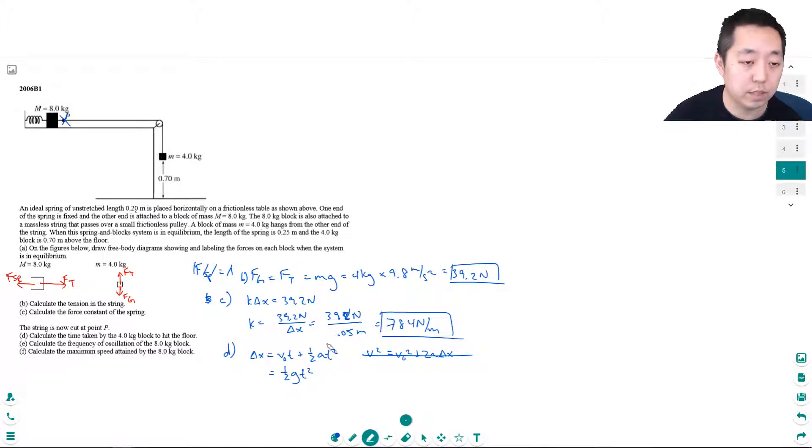So t is equal to the square root of 2 delta x over g. The displacement delta x is 0.7 meters divided by 9.8 meters per second squared.